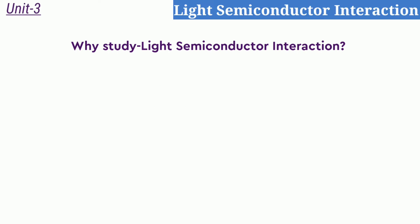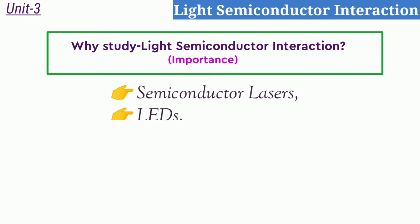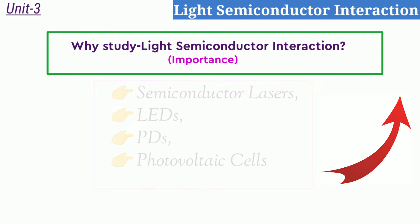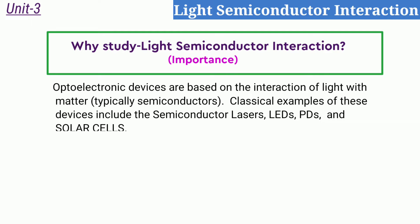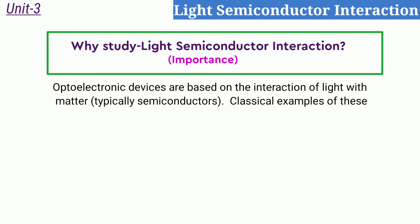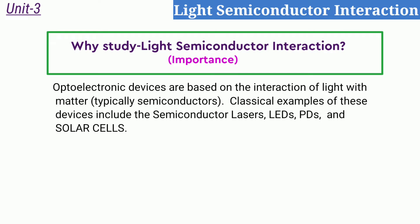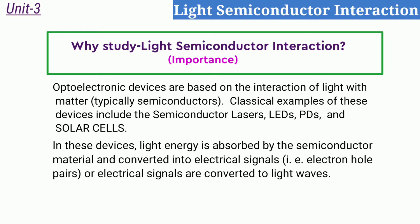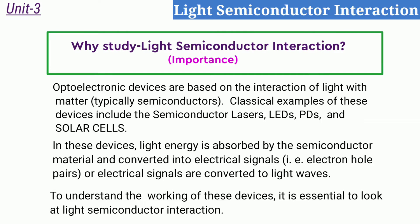All optoelectronic devices — semiconductor lasers, LEDs, photodetectors, and solar cells — are based on the interaction of light with semiconductors: how the semiconductor behaves when photons fall on its surface, whether they are absorbed, transmitted, or reflected. Not all photons are absorbed; it is the absorption process that generates electron-hole pairs, converting a light signal into an electrical signal.